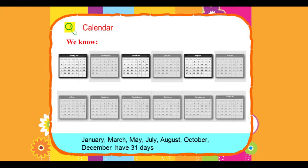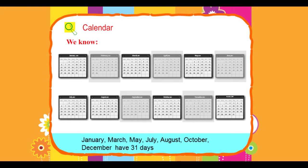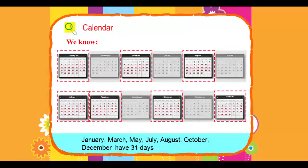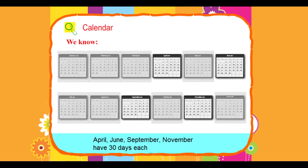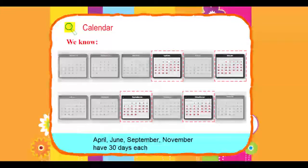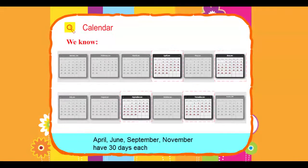January, March, May, July, August, October, and December have 31 days. April, June, September, and November have 30 days each.